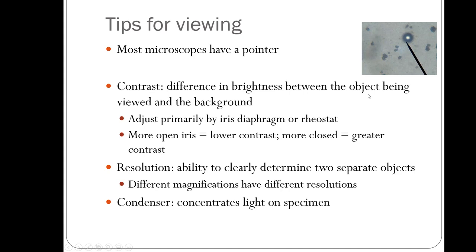Contrast means the difference in brightness between the object you're looking at and the background — you want good contrast so you can see what you're looking at. You can adjust this with the iris diaphragm lever or the rheostat; generally, the more open the iris, the lower the contrast; more closed gives greater contrast. Resolution refers to the ability to clearly distinguish two separate objects from one another. The condenser concentrates the light on the specimen and is an important part of the microscope.